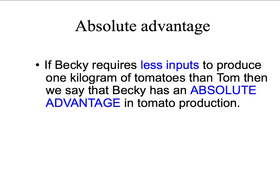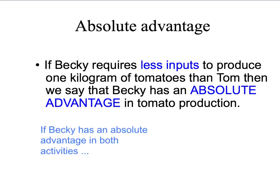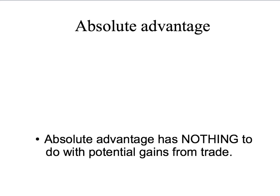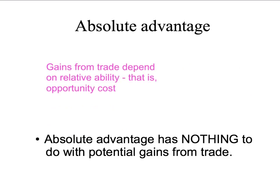Because Becky requires fewer hours of labour to produce one kilogram of tomatoes than Tom, we say that Becky has an absolute advantage in tomato production. Similarly, Becky needs less time to produce a kilogram of potatoes, so she also has an absolute advantage in potato production. But if Becky has an absolute advantage in both activities, why would she want to specialise and trade with Tom? Absolute advantage has nothing to do with potential gains from trade. Rather, gains from trade depend on relative ability — that is, opportunity cost.